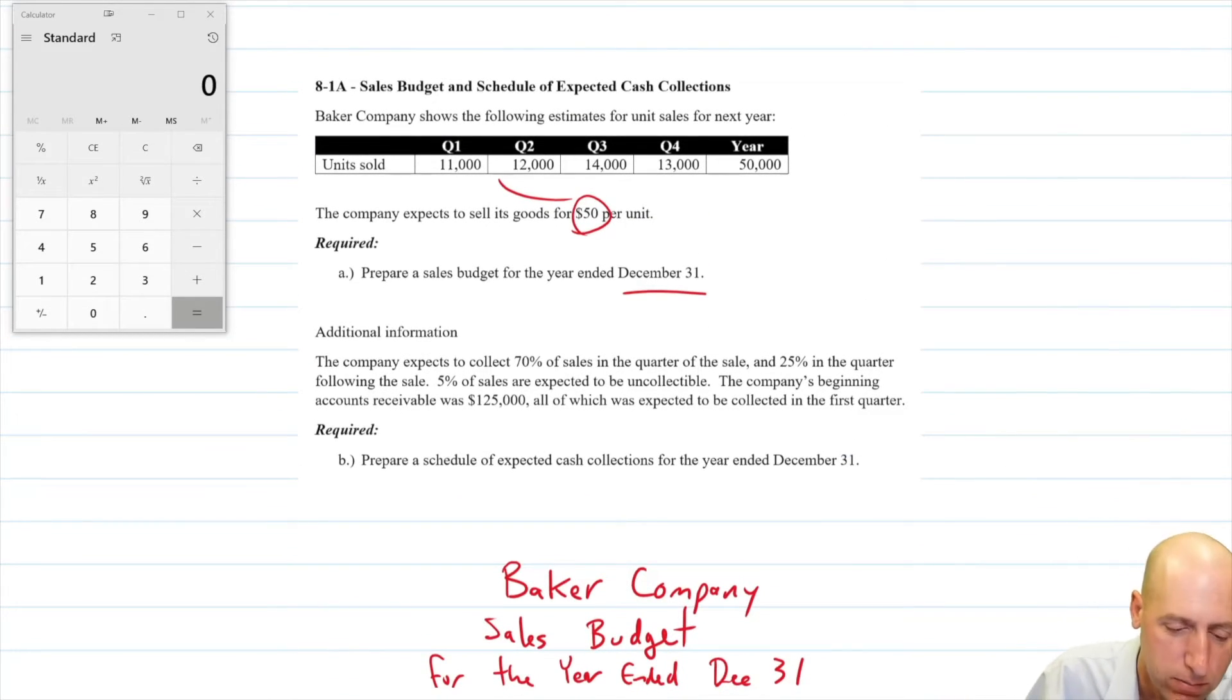So let's read on in the question. It says additional information. The company expects to collect 70% of sales in the quarter of the sale and 25% in the quarter following sale. So in other words, if I sell stuff in January, February, March, quarter one, I expect to collect most of that money in January, February, March, probably the things I sell at the end of March, I won't get till April. So that's 25% of the money is going to come in in the quarter following the sale and 5% of whatever I sell, I just don't see the money. The customer goes bankrupt or fights the bill, doesn't want to pay for some reason. I don't see the money. It says the company's beginning accounts receivable was 125,000, all of which was expected to be collected in the first quarter. Prepare a schedule of expected cash collections.